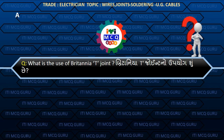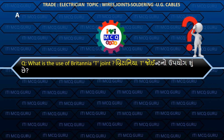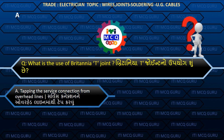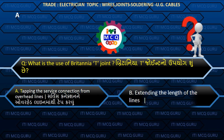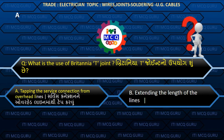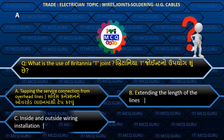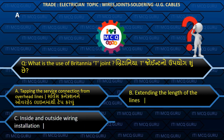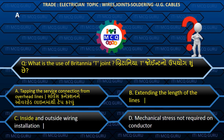What is the use of a Britannia T joint? (Britannia T joint noo upyog shun chhe?) Answer A: Tapping the service connection from overhead lines.